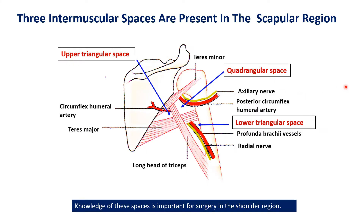In this diagram we can see the three spaces. The quadrangular space, as the name suggests, has four boundaries and is present superolaterally. These spaces are present on the lateral aspect of the scapular region, very close to the axilla. The upper triangular space has three boundaries and is located superomedially, while the lower triangular space is located inferolaterally.